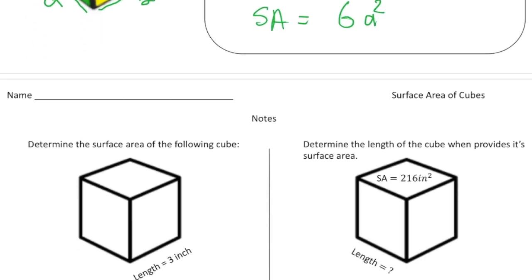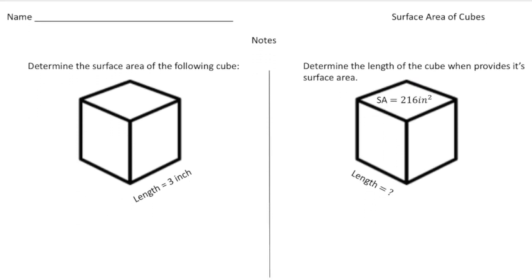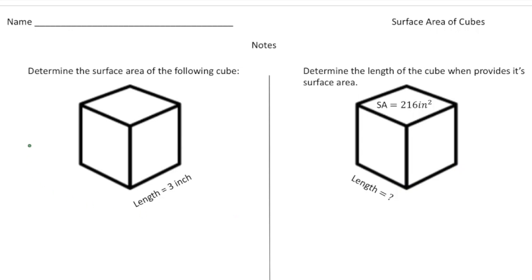So if you turn the page and here we have a couple cubes. And the first question says, determine the surface area of the following cube. So all we know is that the length is three. So I'm going to first write down the formula. So surface area equals six a squared. And I know the a value is three. So what I'm going to do is I'm going to substitute a three in for the a. So it's going to be six times three squared.